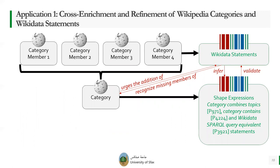So now we will see how the combination of Wikipedia categories and Wikidata statements can have useful applications. The first application is the cross enrichment and refinement of Wikipedia categories and Wikidata statements. In fact, each Wikipedia article that is included in the category has its own Wikidata item that includes a set of Wikidata statements.